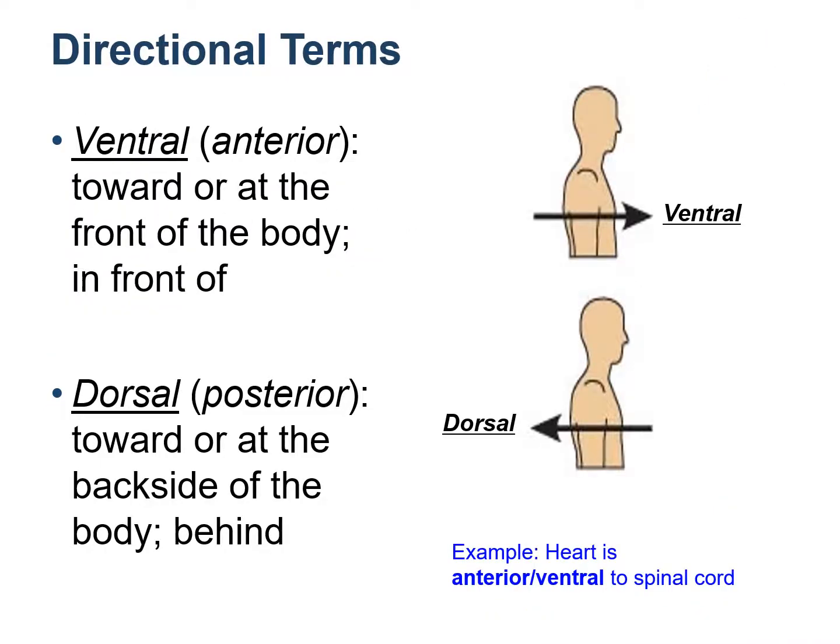The next set is ventral versus dorsal. Ventral is also known as anterior, while dorsal is also known as posterior. Ventral or anterior means towards the front side of the body, while dorsal or posterior means towards the back side of the body. An example is the heart is anterior or ventral to the spinal cord, meaning the spinal cord is posterior or dorsal to the heart. Can you think of another example using ventral versus dorsal?